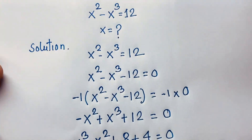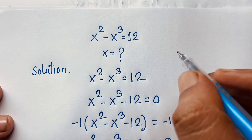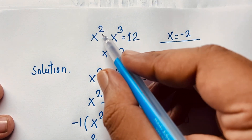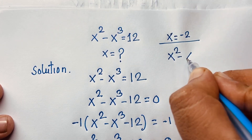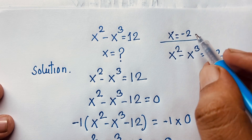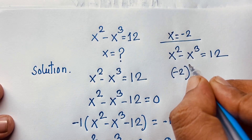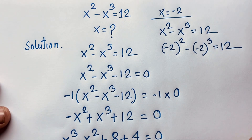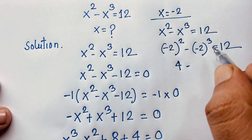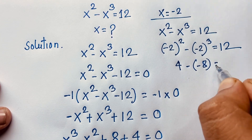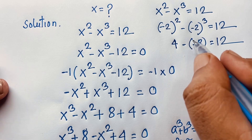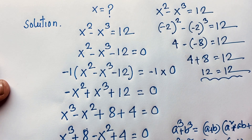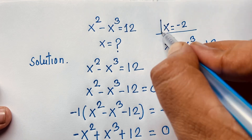Let's verify our answer. The equation is x squared minus x cubed equals 12, with x equals negative 2. Substituting: negative 2 whole to the power 2 minus negative 2 whole to the power 3 equals 12. Negative 2 squared is 4, and negative 2 cubed is negative 8. So 4 minus negative 8 equals 4 plus 8 equals 12. Left-hand side equals right-hand side, confirming x equals negative 2 is our real solution.